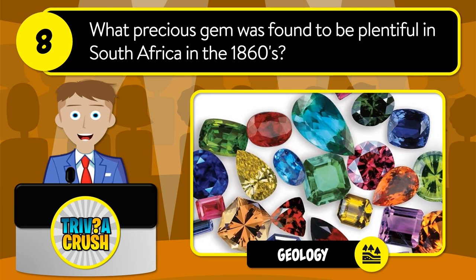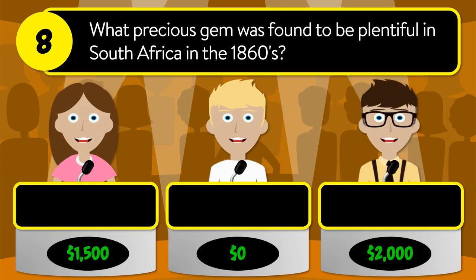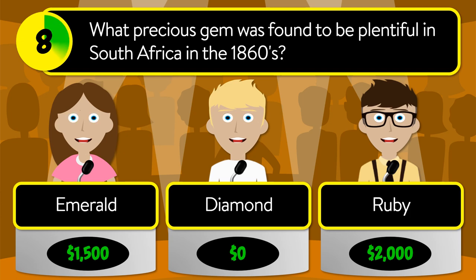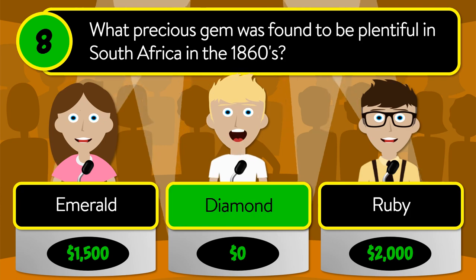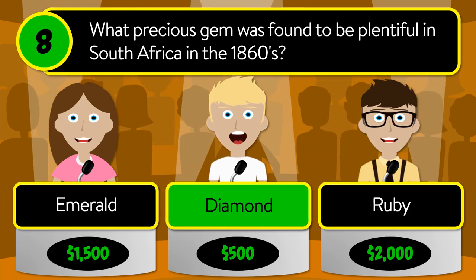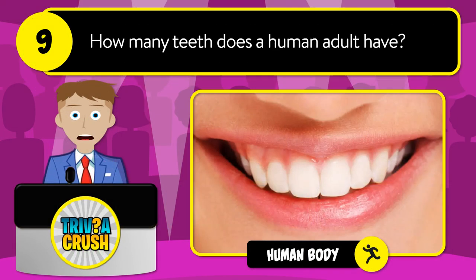Question number eight: what precious gem was found to be plentiful in South Africa in the 1860s? The correct answer is diamond.